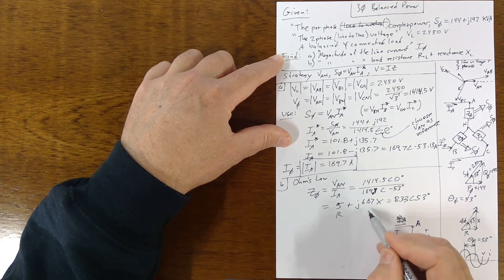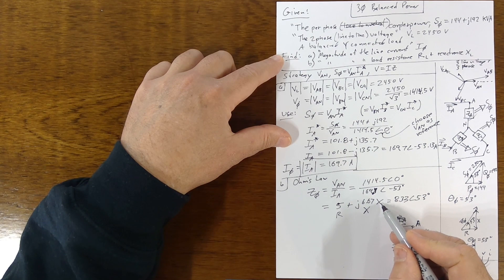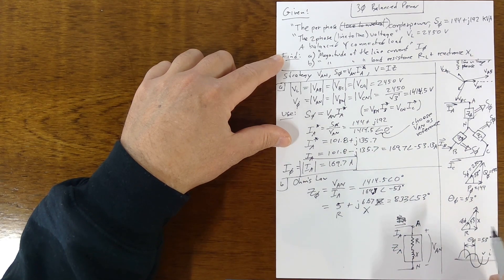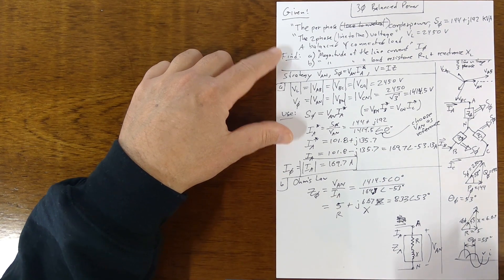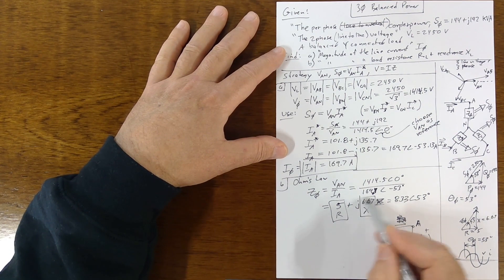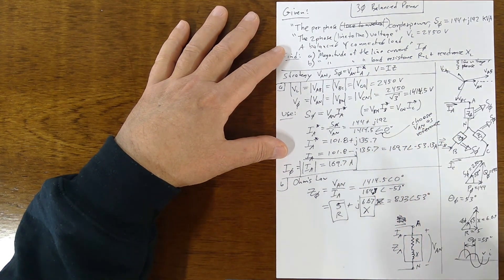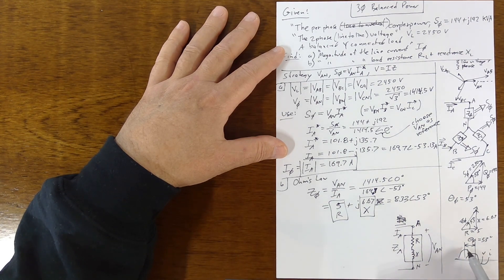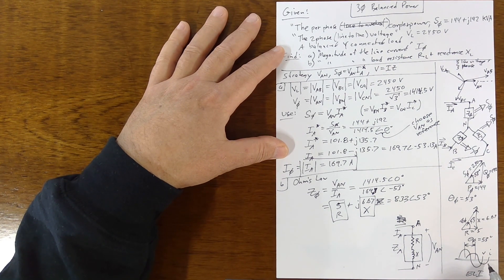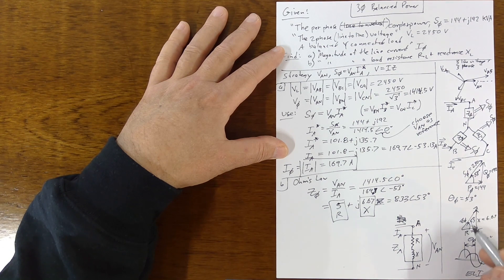So the answers for part (b): R_L = 5 Ω and X_L = 6.67 Ω. These are the same for all three phases. Back in the time domain, this is ELI — voltage leads the current — because the reactance is positive and the angle is positive. The voltage is ahead of the current by 53 degrees.